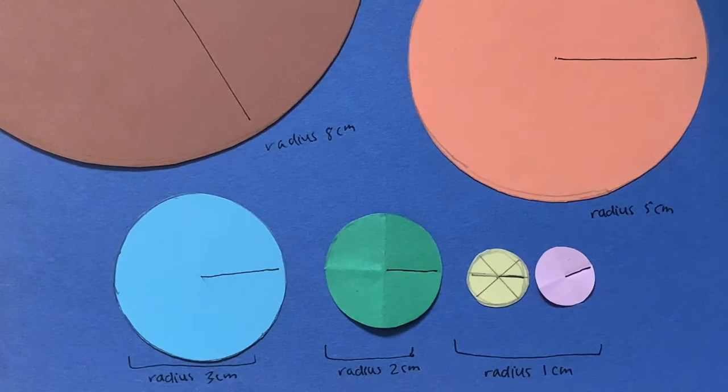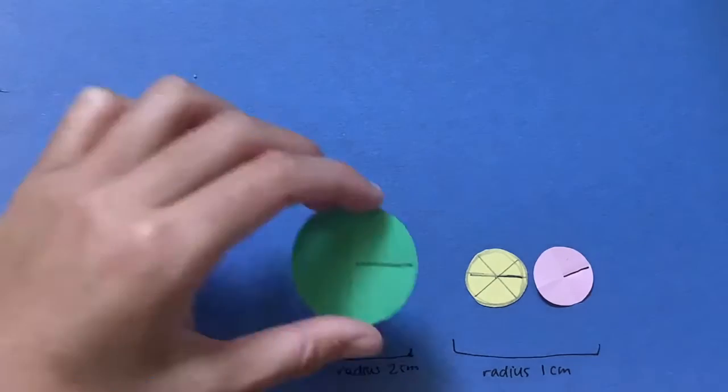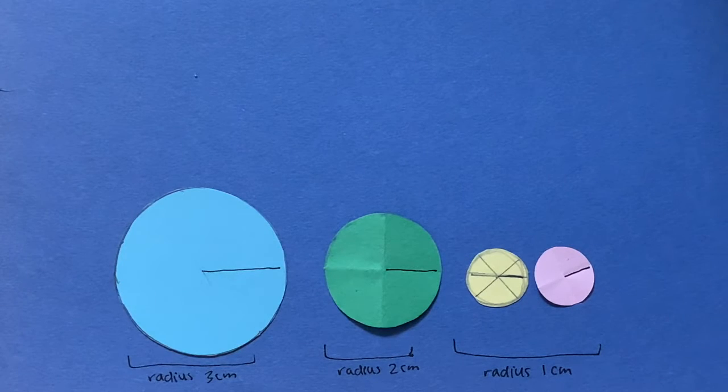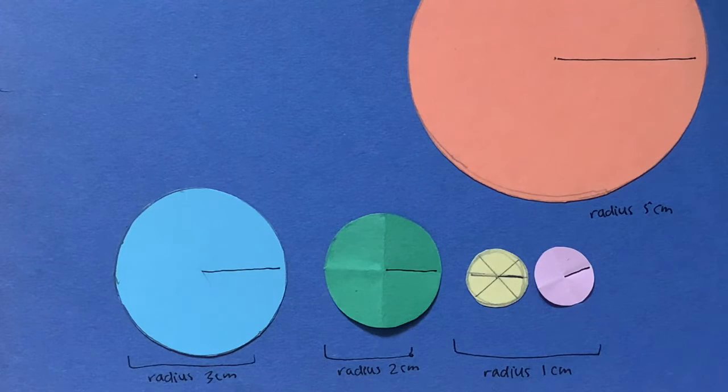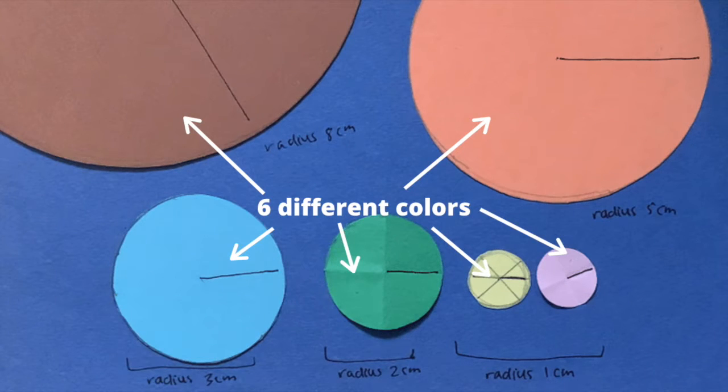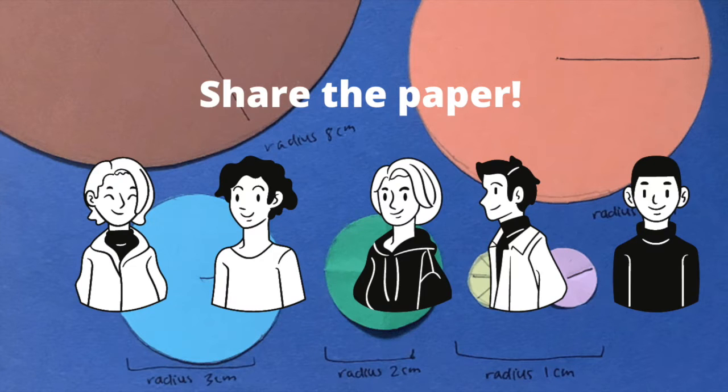Now, we are going to make more circles, but these ones will be in different sizes. You will have one with a radius of 2 cm, one with a radius of 3 cm, one with a radius of 5 cm, one with a radius of 8 cm, and all of these should be different colors. In the end, you should have 6 circles of different colors. Feel free to share the construction paper with other students, and try seeing how many of you can get circles out of one piece of paper.